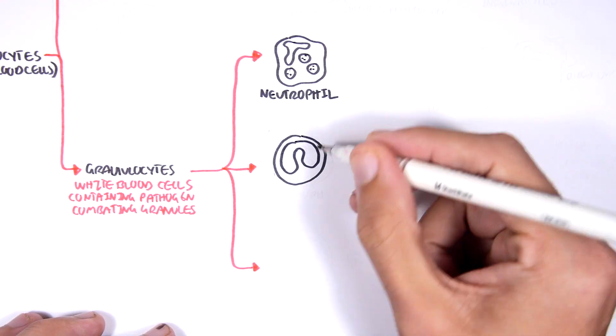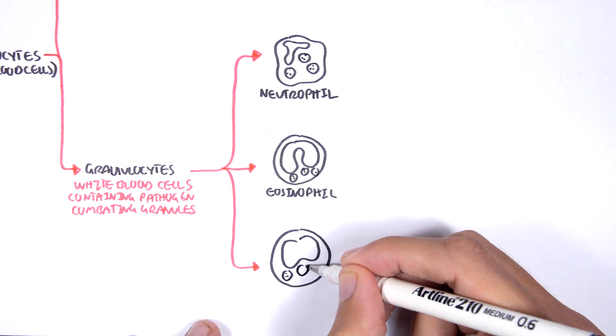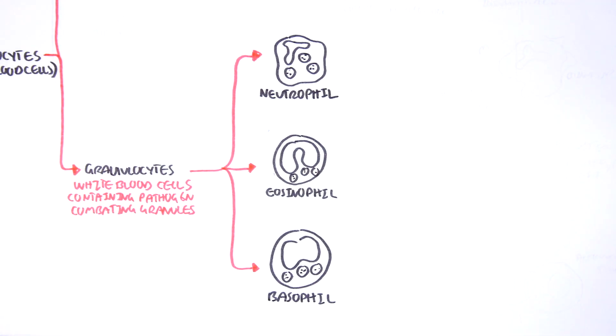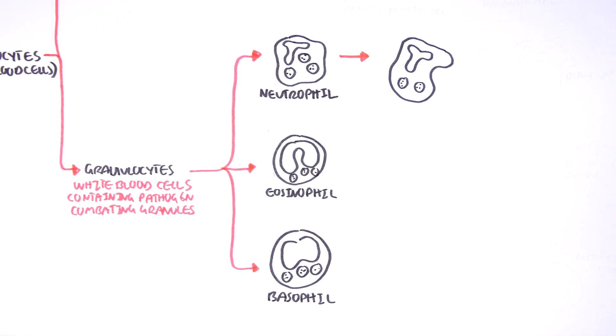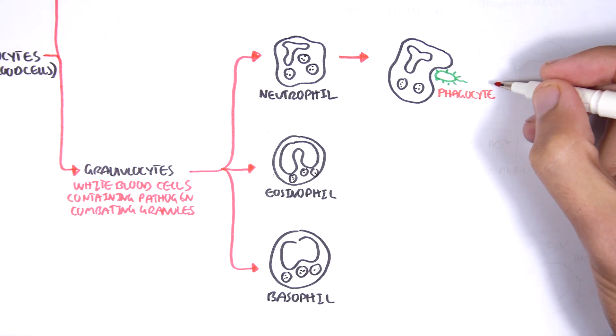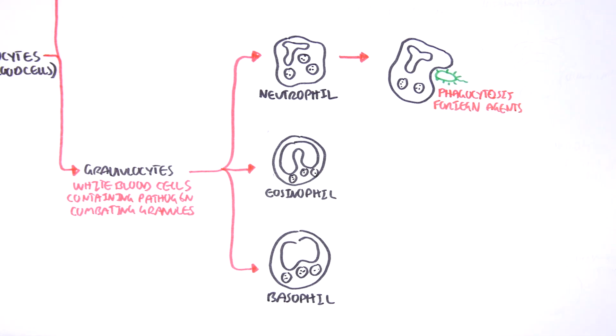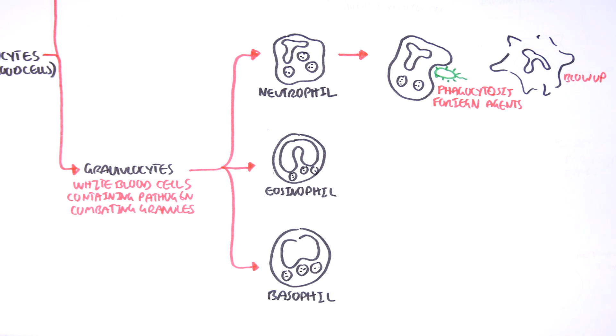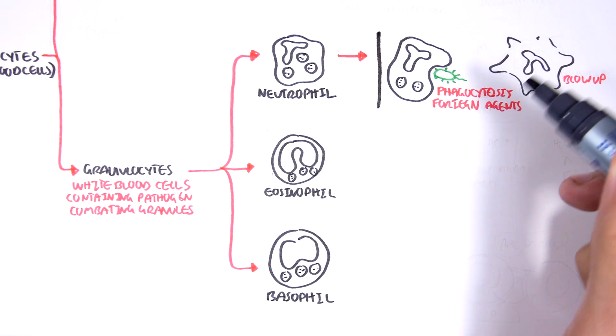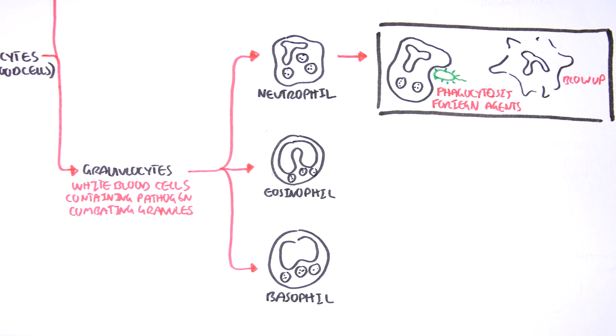These are the neutrophils, eosinophils, and basophils. Let's look at each one of them and see what they do in a brief picture. The neutrophils' main function is phagocytosis of foreign agents, such as pathogens or debris. In the process, they will blow up, and so they're quite dangerous and highly inflammatory.